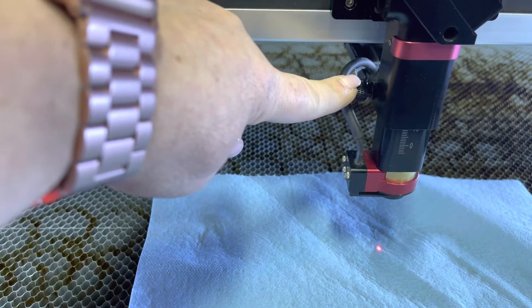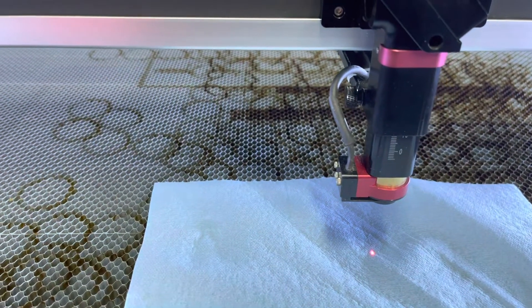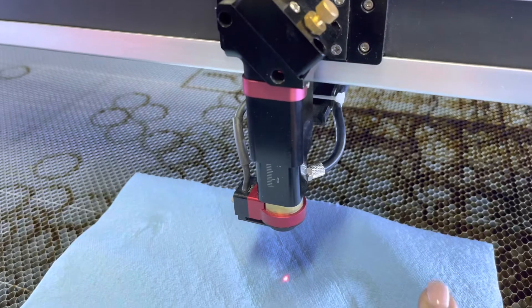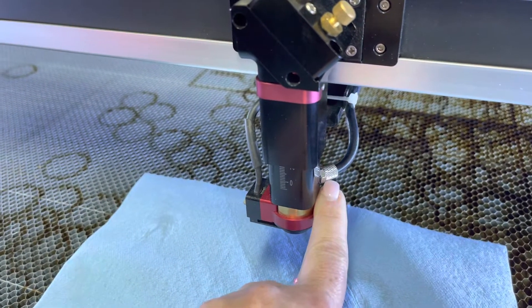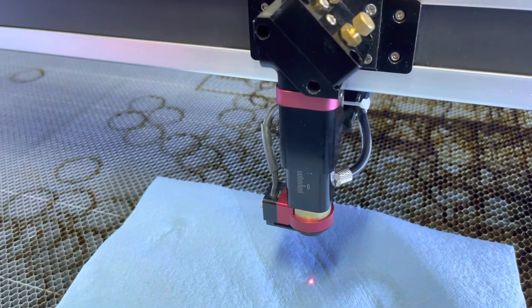So this screw right here is how you're going to unscrew the lens, and then on the other side, the little silver cuff you're going to unscrew, and that is going to help you take off the air assist.